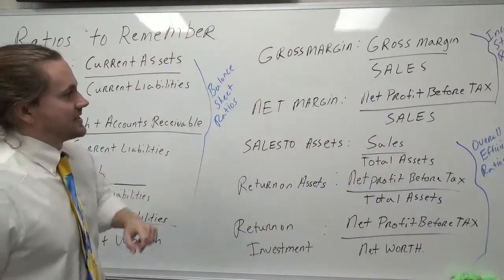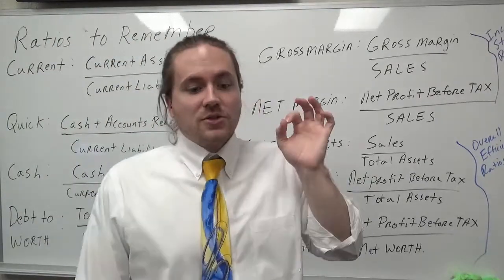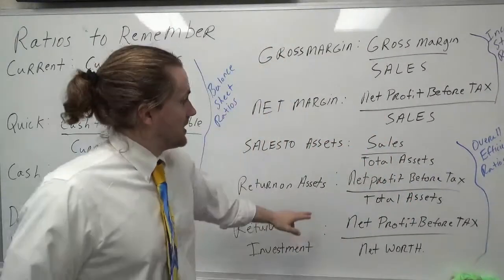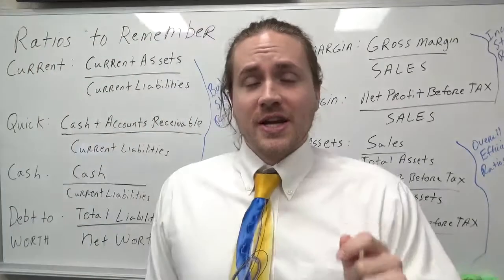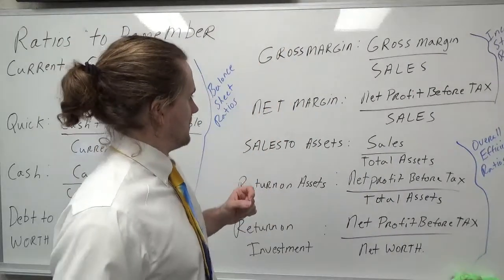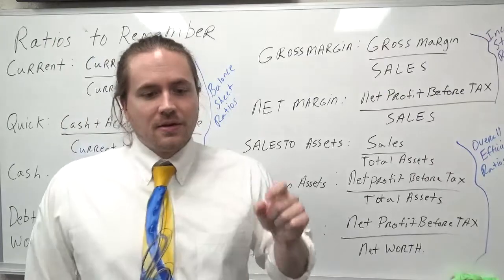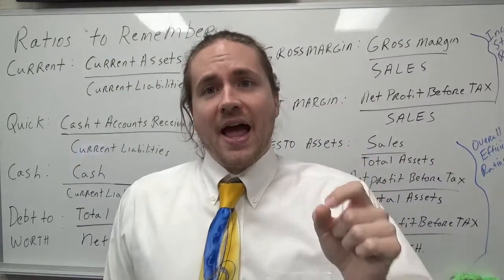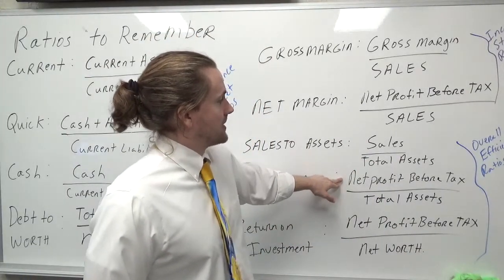We've also got return on assets. That is the net profit before tax divided by total assets. That's going to measure the efficiency of total assets in generating net profit before tax. Let's say I had a ratio of 30%. That would tell me that for every $1 that I invest in assets, I generate a net profit before tax of $0.30.